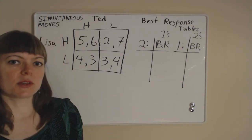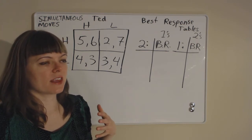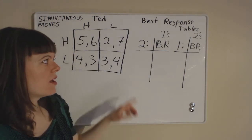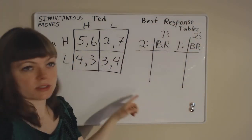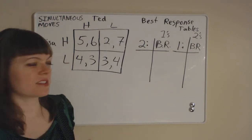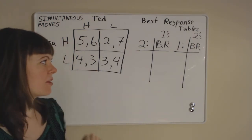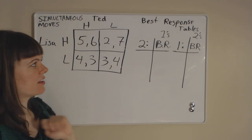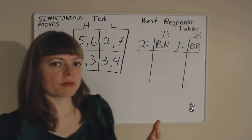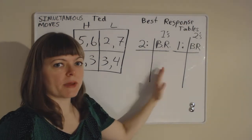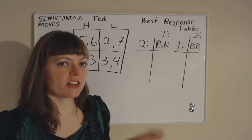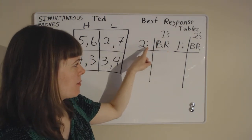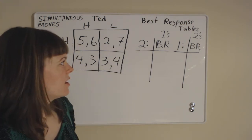Now we're looking for the Nash equilibrium, which is really a way of thinking about the best response to each other's choices. To do this, we'll first use best response tables and then I'll show you a faster way of doing the same thing directly on the payoff matrix. In best response analysis, we need to check both players' payoffs. This is Lisa's table — player one's perspective — and she needs to think about her best response to each of player two's strategies.